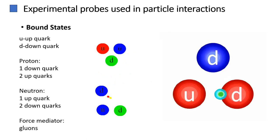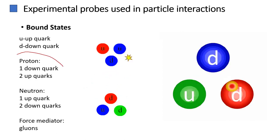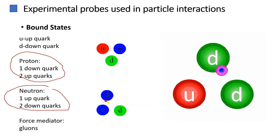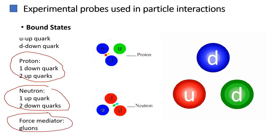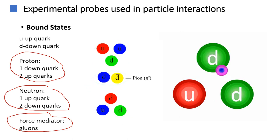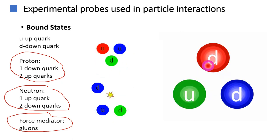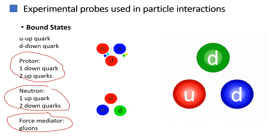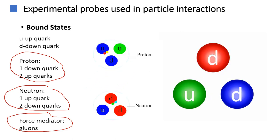Bound states refer to particles held together by strong forces, forming composite particles. For instance, protons and neutrons are composed of quarks held together by the strong nuclear force mediated by gluons. Experiments aiming to understand bound states involve studying the properties of these composite particles. Particle accelerators and detectors help to reveal the internal structure, interactions, and properties of such bound states. Each of these experimental methods plays a vital role in unveiling the underlying principles of particle interactions, contributing to the validation of theoretical models, the discovery of new particles, and the exploration of fundamental forces.